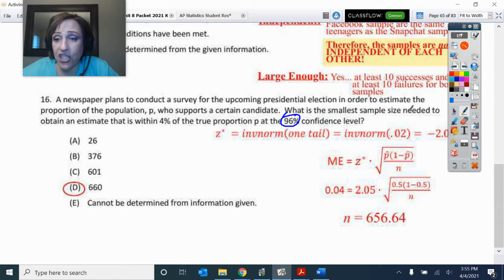And if you have 96% in the middle, that puts 2% in each tail. So inverse norm of one tail. So our critical value was 2.05 with 0.04. And when I solve that, that's 656.64 for the minimum. So that would mean 660 is the next, the smallest size listed there that I could use. All right.